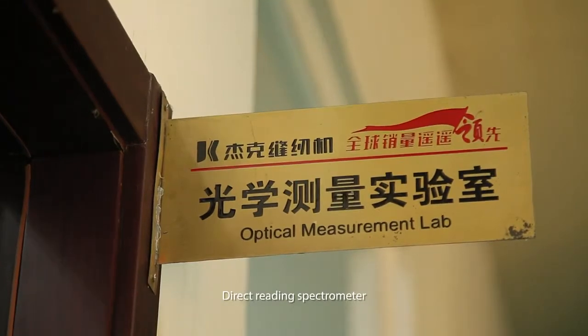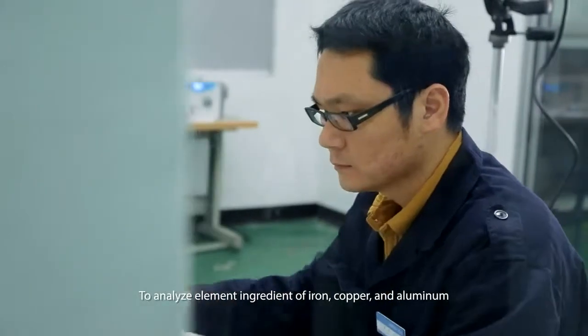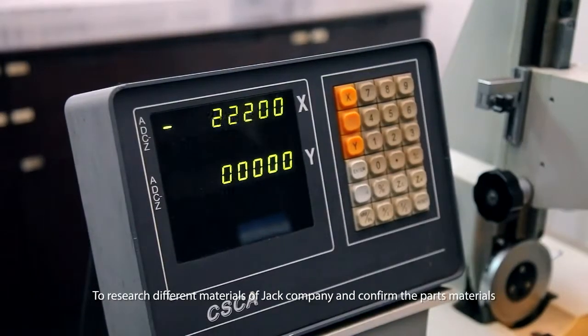The Rector-reading spectrometer analyzes element ingredients of iron, copper, and aluminum to research different materials and confirm the parts materials.